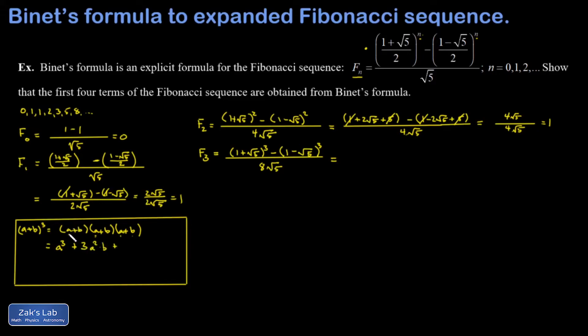Then I go down to the terms that have only one a in them. Well, there's three different ways of selecting which one you're going to pick the a from, and then you pick the b's from the other two. So I get three of these as well. And then there's only one way to get a b cubed.